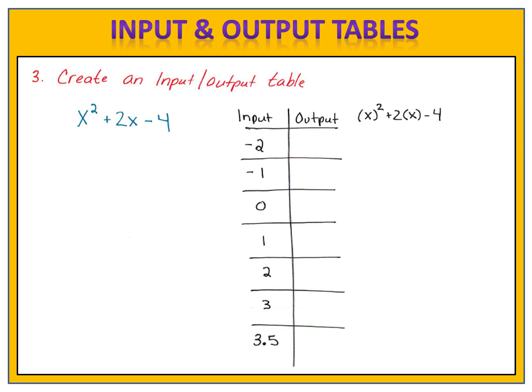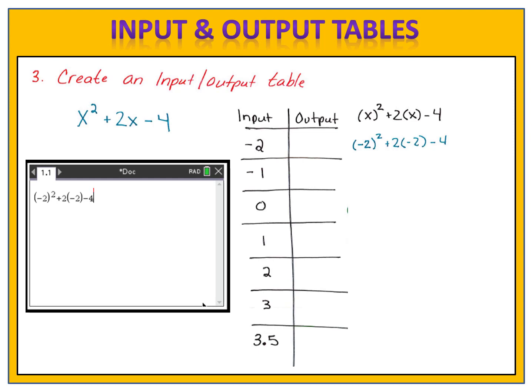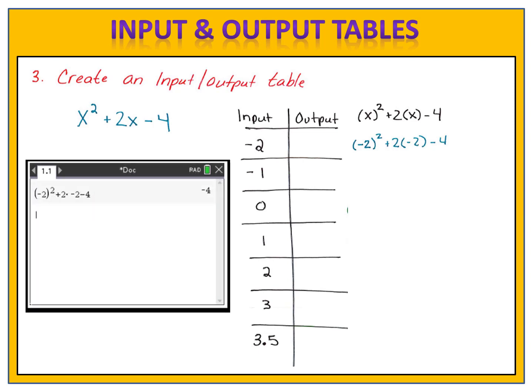Our expression is x squared plus 2x minus 4. Put your x's in parentheses, and then begin doing the substitution. When the input is negative 2, I replace the x's with a negative 2. Then I go to my graphing calculator. I type that in exactly as it looks, and I hit enter. When the input is negative 2, the output is negative 4. Can you fill in the rest of that table? Please pause the video here, fill in the outputs, and then when you're done, come back and let's see how you did.